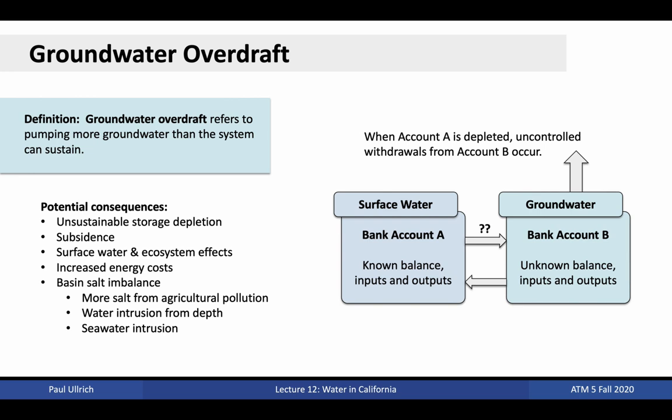Increased groundwater pumping runs the risk of triggering groundwater overdraft. Groundwater overdraft is analogous to a bank account overdraft, referring to pumping more groundwater than the system can reasonably sustain. The possible consequences include unsustainable storage depletion, ground subsidence, surface water and ecosystem effects such as drying of streams that are above the water table, and increased energy costs. Additionally, these withdrawals have been steadily increasing the amount of salt in Central Valley groundwater as a consequence of water intrusion from depth, basin salt imbalance, seawater intrusion, and industrial pollutants seeping into the soil. The biggest concern with groundwater overdraft is what to do when we run out of groundwater, as continued withdrawals have the possibility of exhausting our groundwater supply and devastating our agricultural industry and rural communities.